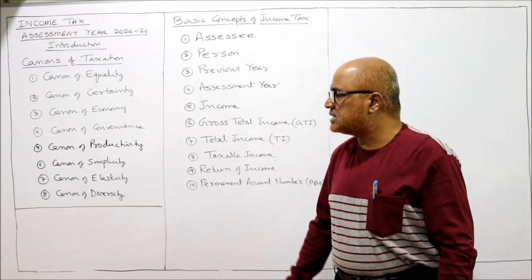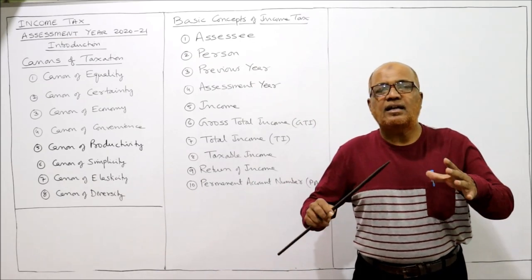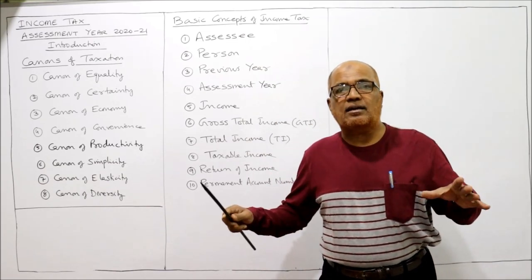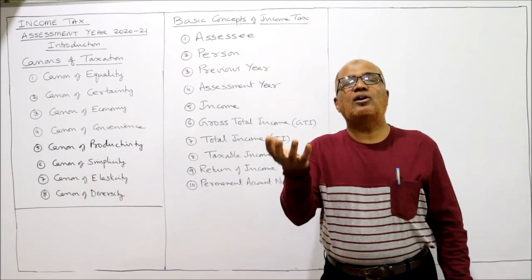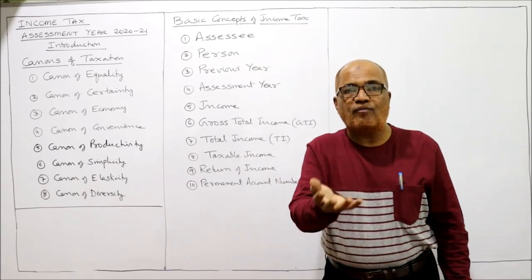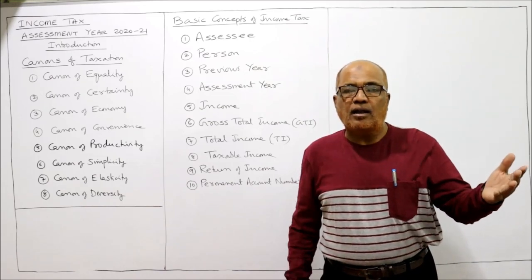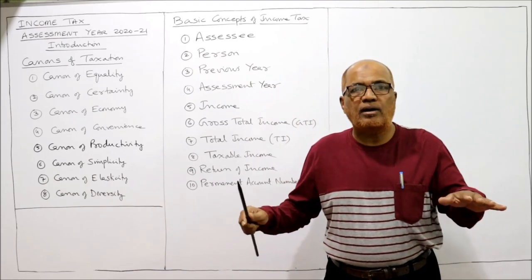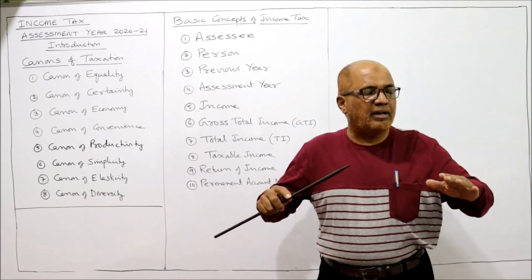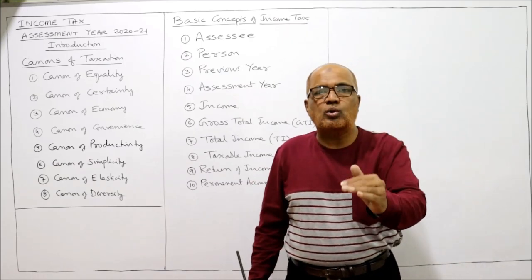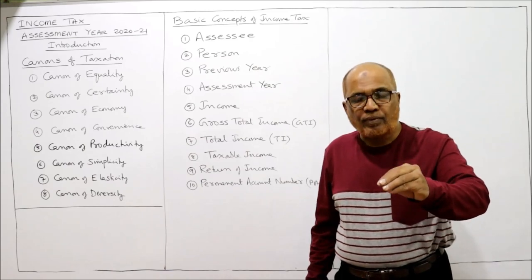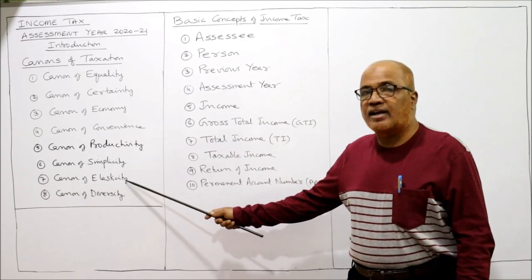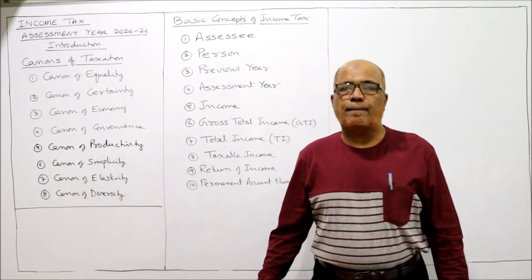The canon of elasticity says taxes should not be rigid or fixed — they should be elastic. For example, when the government needs huge funds due to a natural calamity, it should be able to increase the rate of tax. Similarly, during normal times when there is no abnormal expenditure, the government should reduce tax and give more exemptions and deductions to the taxpayer.